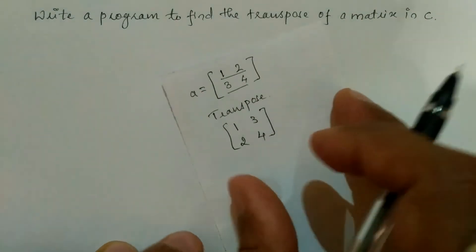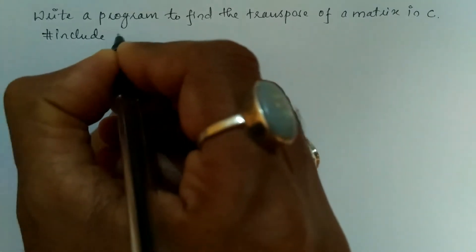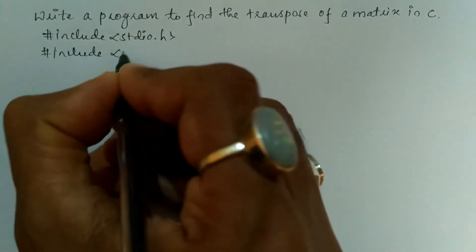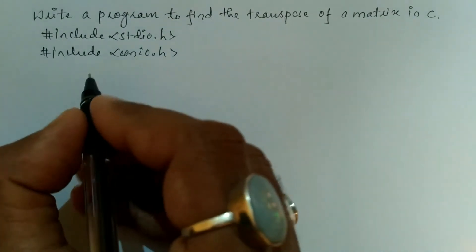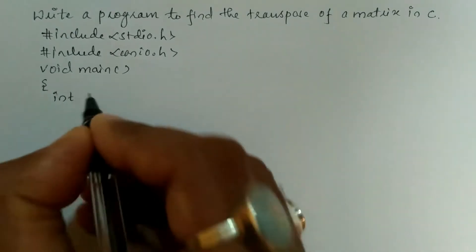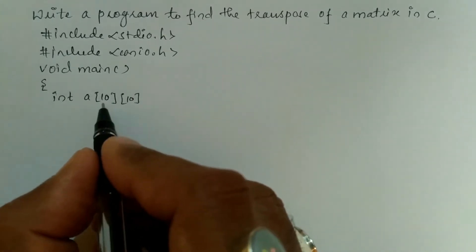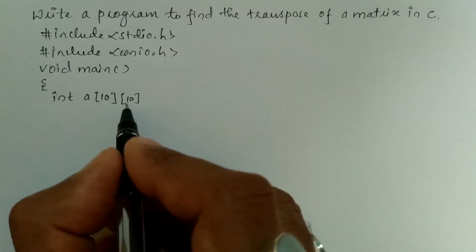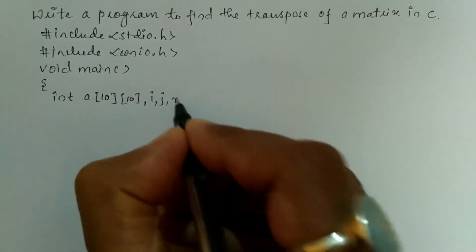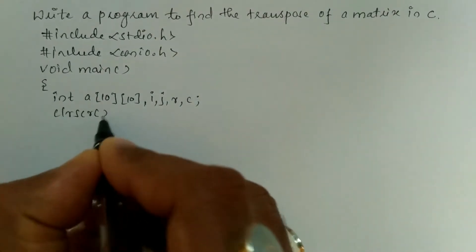Let us write the program. We begin with the preprocessor directives: #include in angle brackets stdio.h header file, and the next preprocessor directive #include in angle brackets conio.h header file. Now we will write the void main function with a curly open brace. Here I'm going to declare the two-dimensional array that forms the matrix, where the first subscript represents the row and the second subscript represents the column. Next, we declare variables i, j, where r represents row and c represents column, and then I'm going to write the clrscr() function which is used to clear the screen.